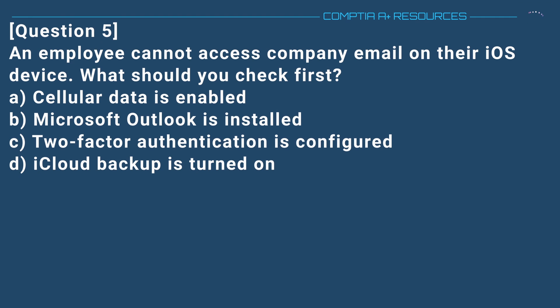Question 5. An employee cannot access company email on their iOS device. What should you check first? A. Cellular data is enabled. B. Microsoft Outlook is installed. C. Two-factor authentication is configured. D. iCloud backup is turned on.